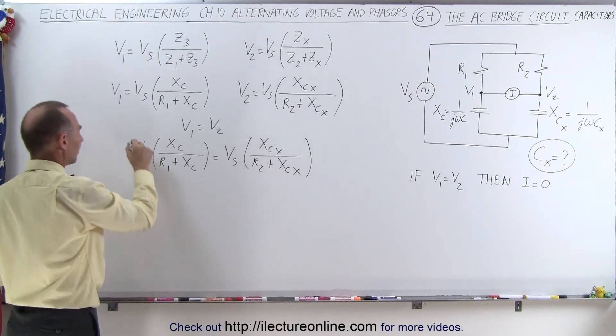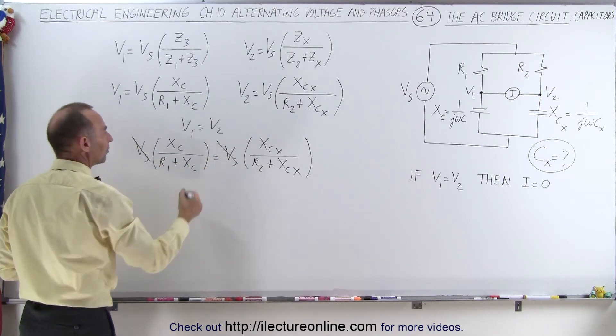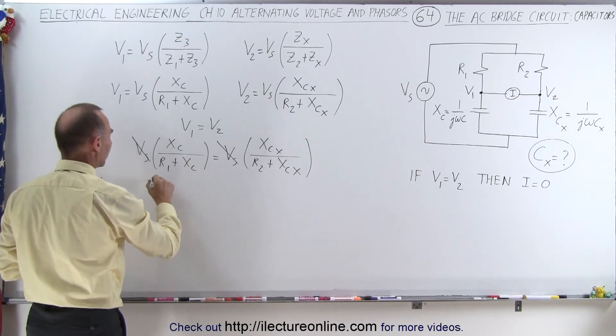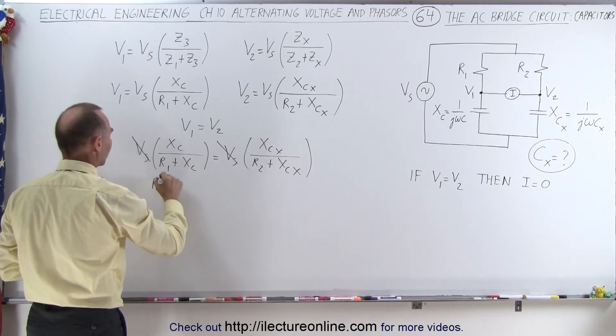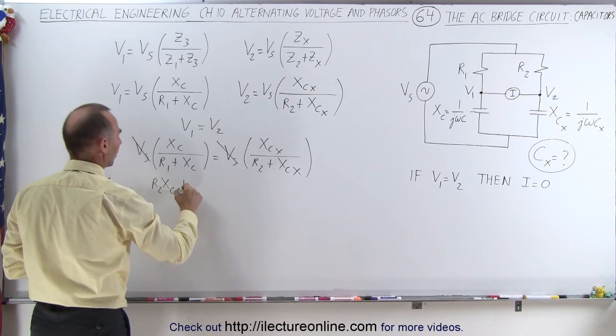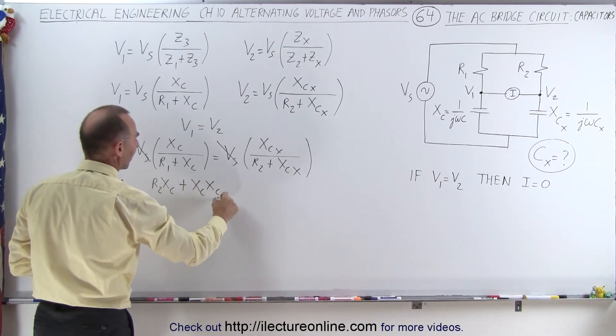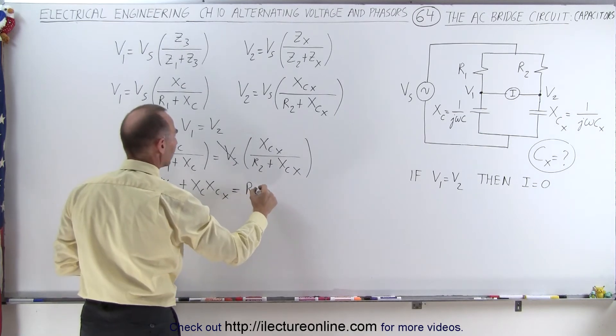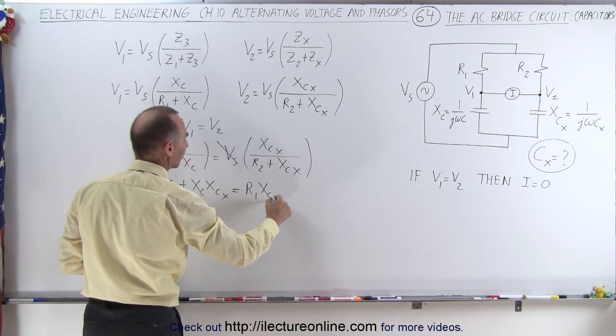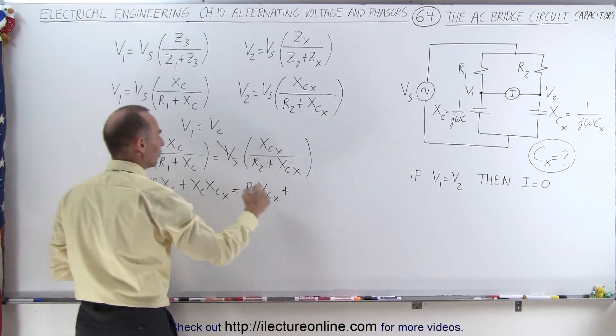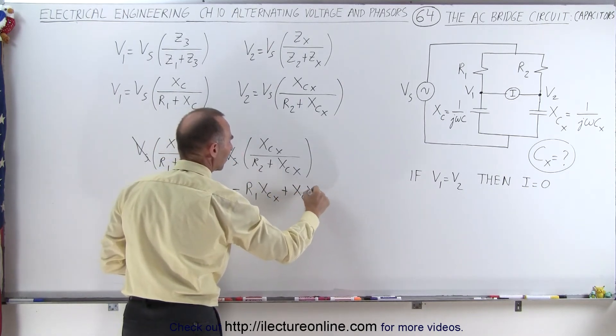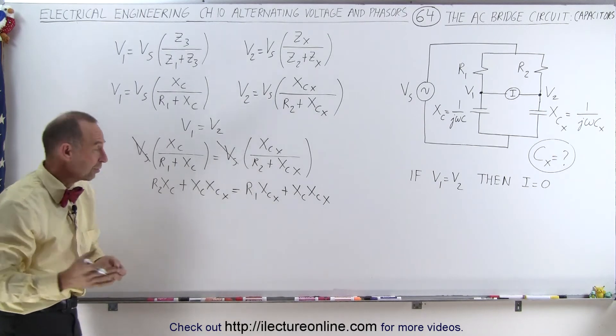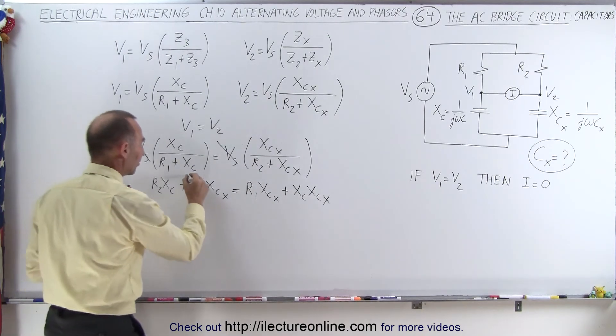Right away, we realize that the source voltage is canceled on both sides. We can now cross-multiply on the left side, we end up with R2 times X sub c plus X sub c times X sub c sub x is equal to, on the right side, we get R1 times X sub c sub x plus, we multiply this, we get X sub c times X sub c sub x. Notice again on both sides of the equation, we have the similar term that cancels out.